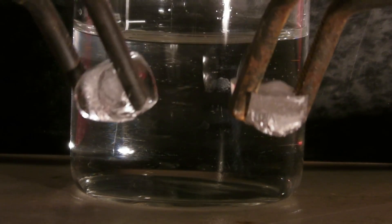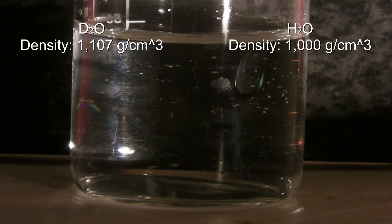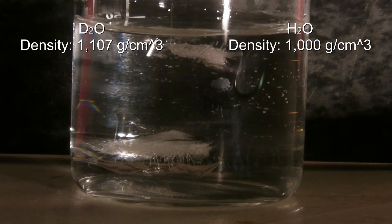Heavy water has a slightly higher density than ordinary water. That's why ice cubes out of heavy water sink in ordinary water.